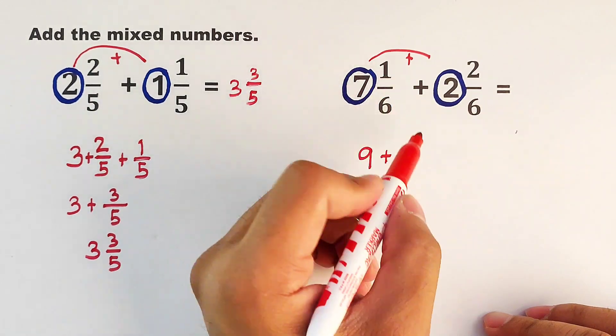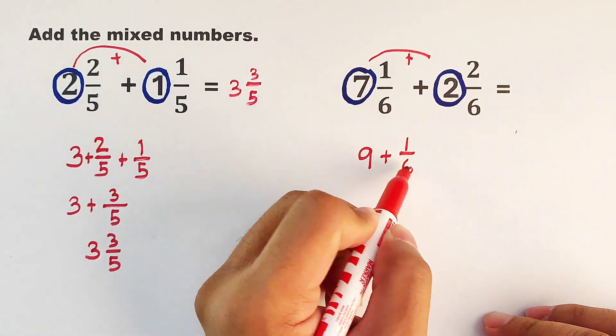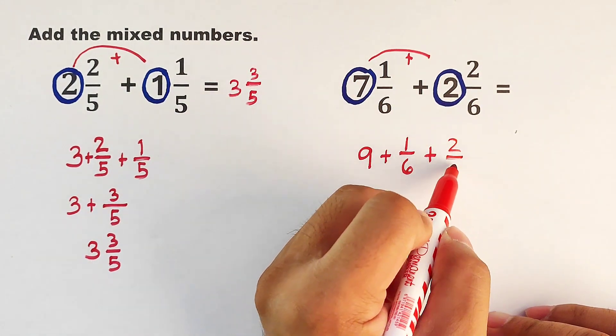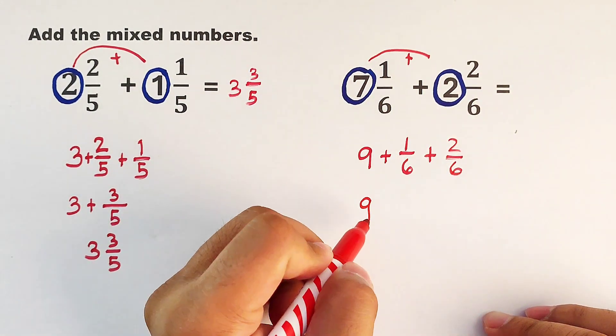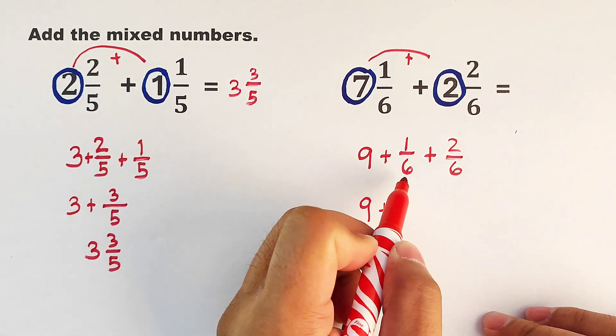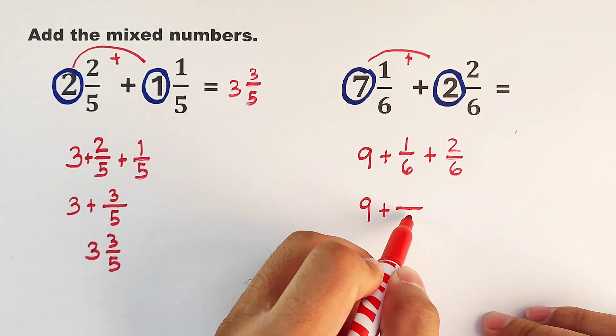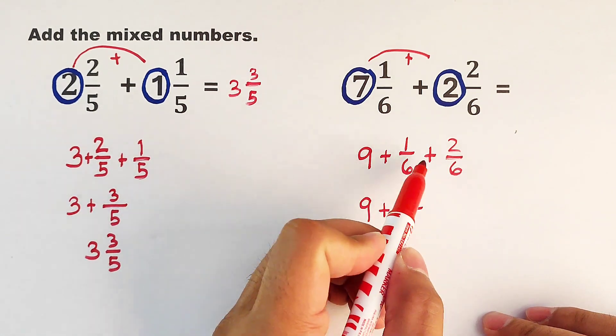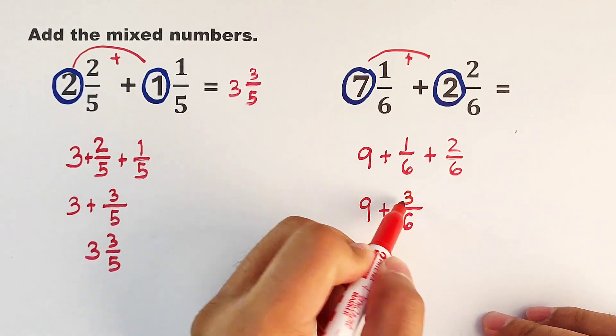Plus, we have the 1 over 6 plus 2 over 6. Copy your whole number 9. And then, as you can see, we have the same denominators. Copy your denominator 6. Then add the numerators: 1 plus 2. That would be equal to 3.